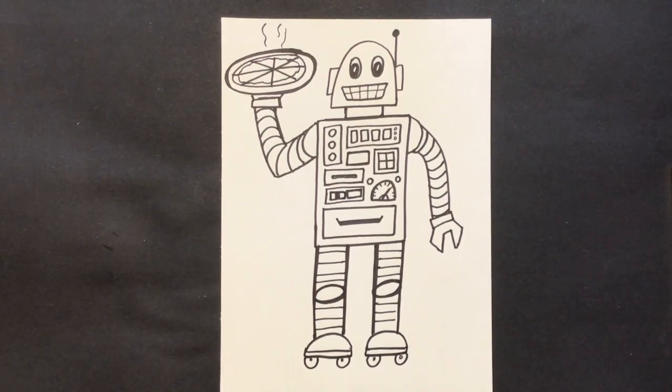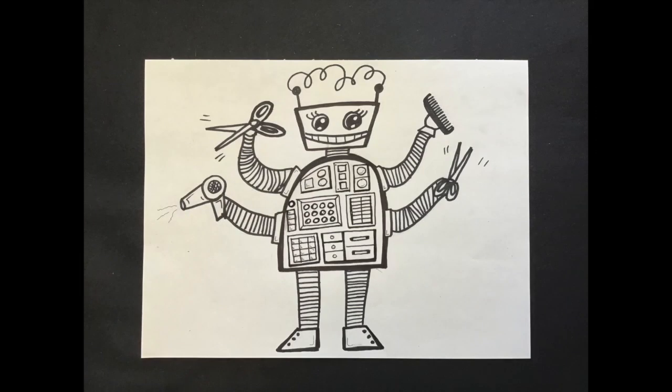I want to give you a couple more ideas for drawing your robot. Do you need a haircut? This robot will cut and style your hair any way you need it. You can see she has a trapezoid head and a half oval body.